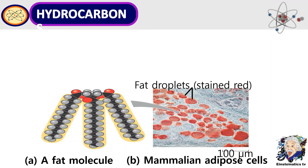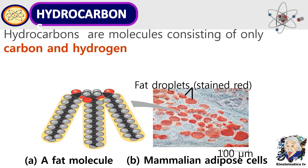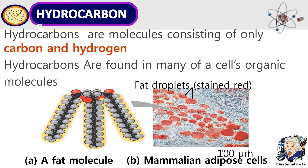Another reason why carbon is abundant in nature is because of hydrocarbons. Hydrocarbons are molecules consisting of only carbon and hydrogen, hence the name hydrocarbon. Hydrocarbons are found in many of a cell's organic molecules such as fat molecules and adipose cells.